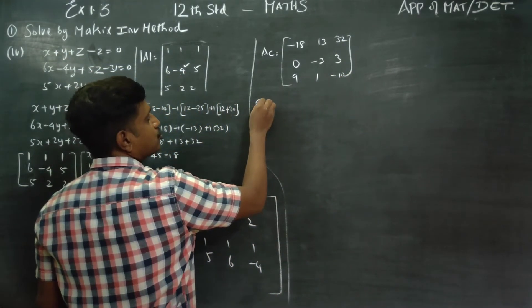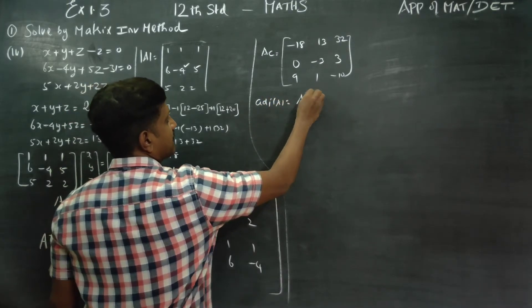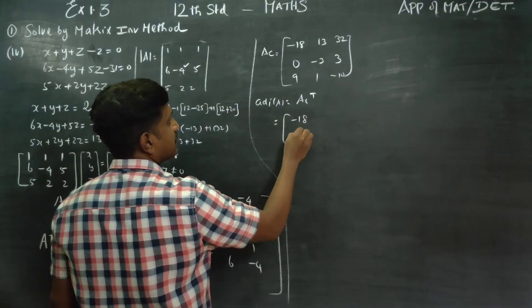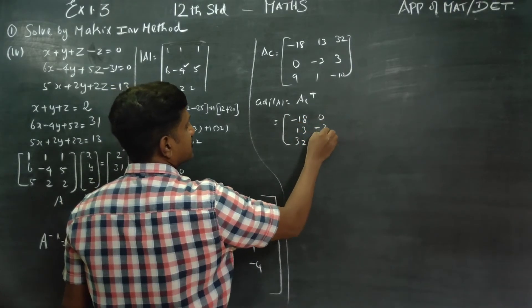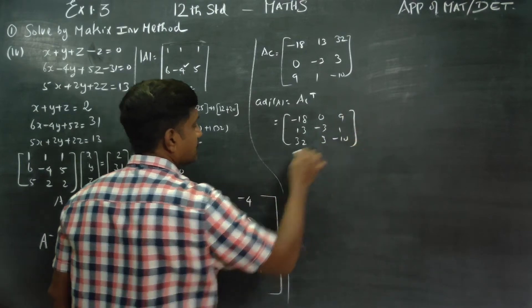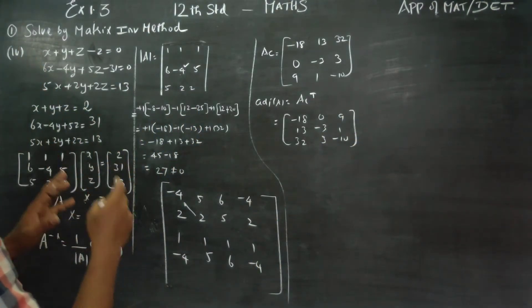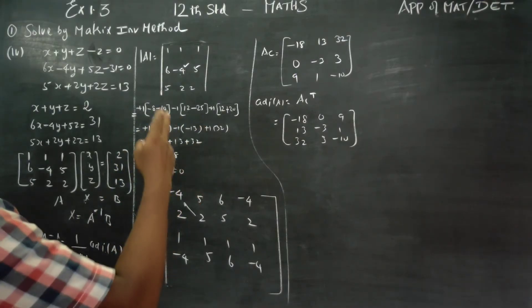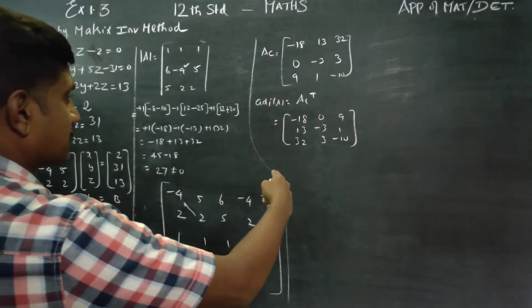When we form the adjoint from the co-factor matrix, we take its transpose. The transpose gives: minus 18, 13, 32 / 0, minus 3, 3 / 9, 1, minus 10. This is my adjoint matrix. After finding the adjoint matrix, the entries are: minus 18, 0, 9 / 13, minus 3, 1 / 32, 3, minus 10.